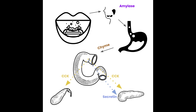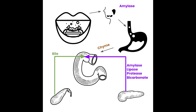When cholecystokinin interacts with the gallbladder, that bile is released through the cystic duct into the common bile duct where it joins with the duct of Wirsung. From the pancreas through the duct of Wirsung come the amylase, lipase, protease, and bicarbonate, and those join together and enter the duodenum through the ampulla of Vater. Once in the duodenum, the bile helps to emulsify the fat and once those fats are smaller the lipase breaks them down further. The amylase and proteases break down carbohydrates into glucose and proteins into amino acids.